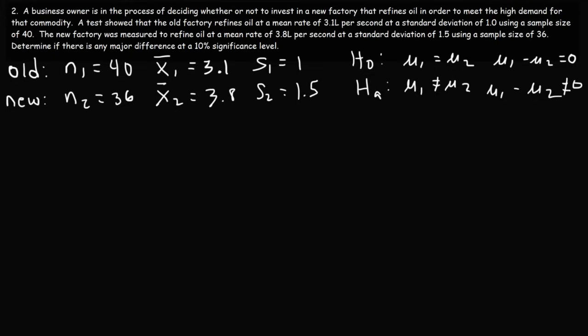Our next step is to determine whether we have a t distribution or a normal distribution. Both sample sizes are greater than 30 — one is 40 and the other is 36 — which indicates that we should use the z test with the normal distribution.